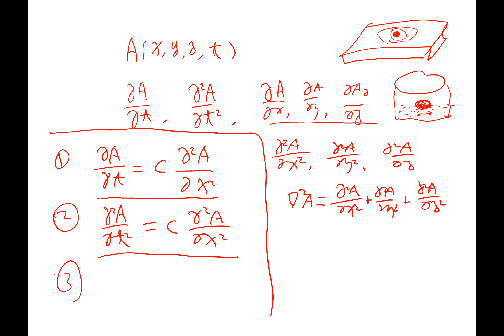The Laplace equation is when the right-hand side is zero, and the Poisson equation is when it equals a constant. These describe static electric or magnetic fields in space. When you see the diffusion equation, you should immediately recognize it describes a diffusion process. When you see the wave equation, you know it describes wave propagation. These are very important equations in physics and engineering.